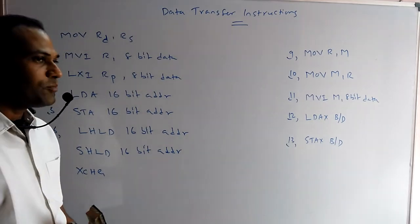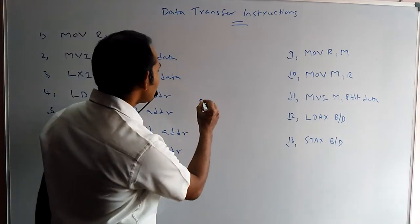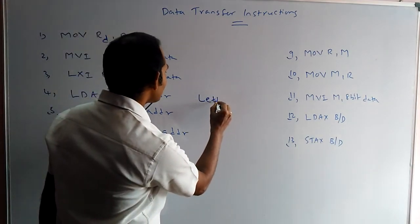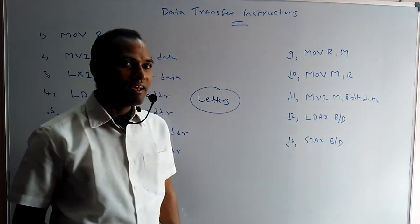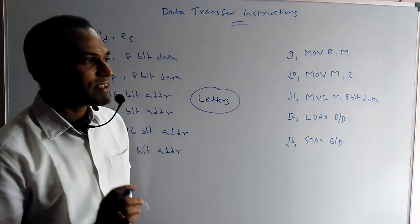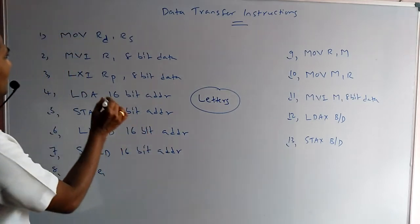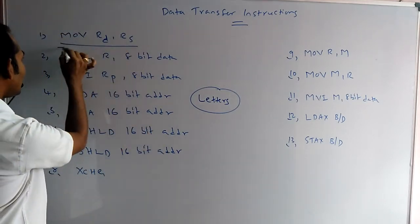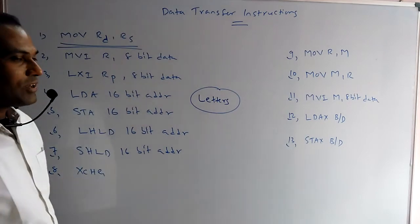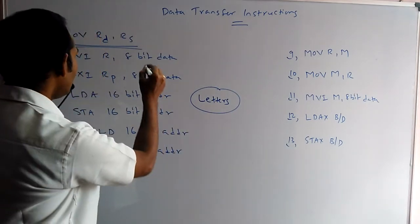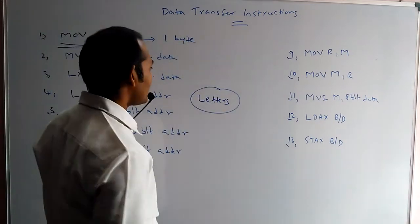There is one simple method. If the instruction contains only letters — no numbers — that is a 1-byte instruction. If you observe this example, only letters are there, which means it is a 1-byte instruction.